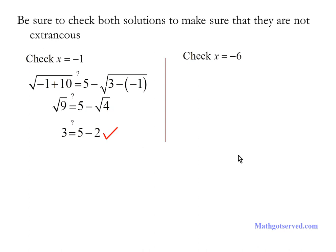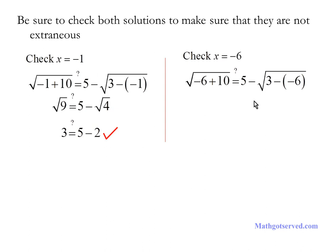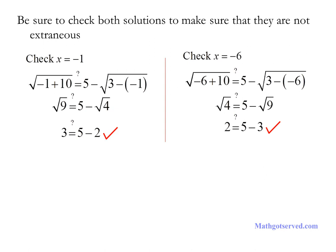Now we check x equals negative 6. We plug negative 6 into all the x's in the original problem. Simplifying, we have the square root of 4 equals 5 minus the square root of 9 — that is, 2 equals 5 minus 3, which is absolutely true. So both of our answers are correct: x equals negative 1 and x equals negative 6.